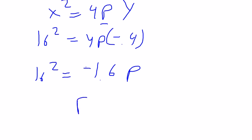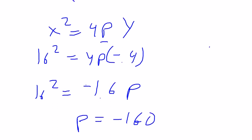So p would equal negative 160. Putting that into the equation, I get x squared equals 4 times negative 160, or negative 640, y.